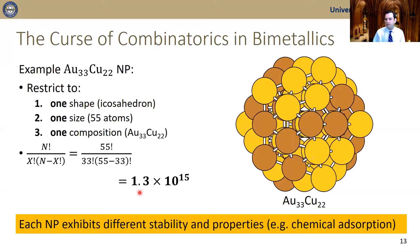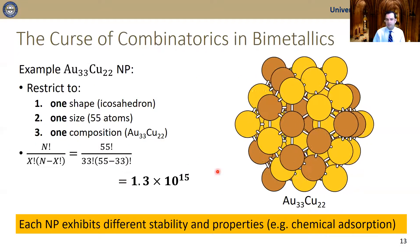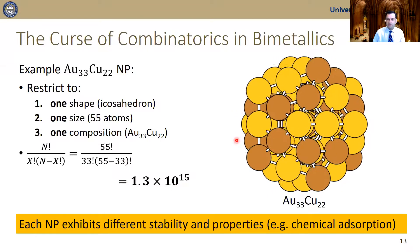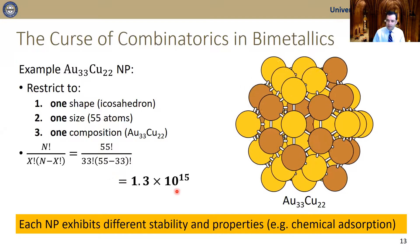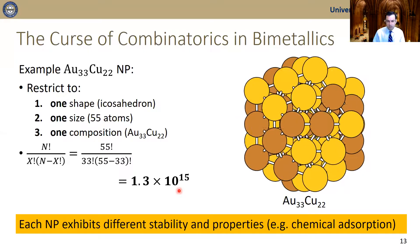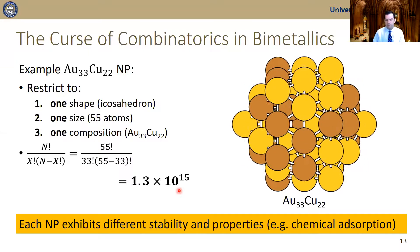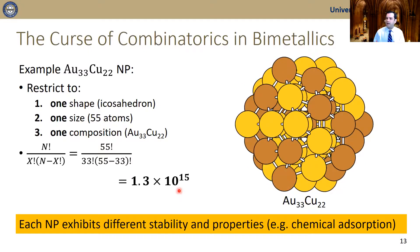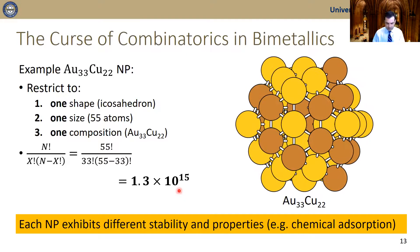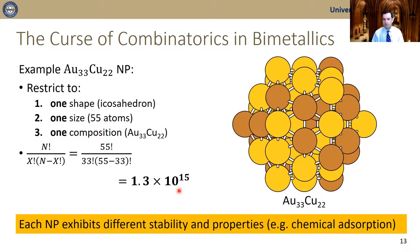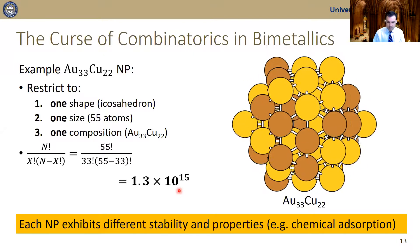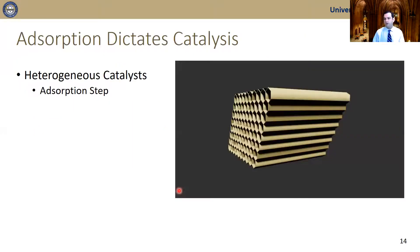We have 10 to the 15 different nanoparticles — 10 to the 15 different isomeric structures. This is a tremendously large number. All these different nanoparticles have different stabilities and different application properties, such as chemical adsorption, which plays an important role in catalysis.